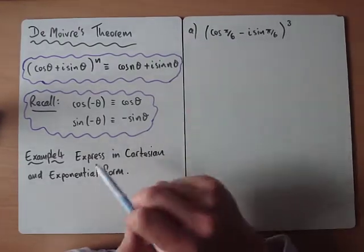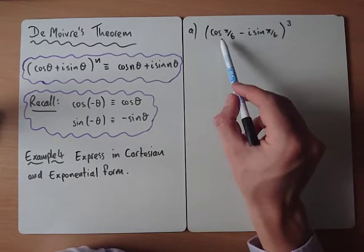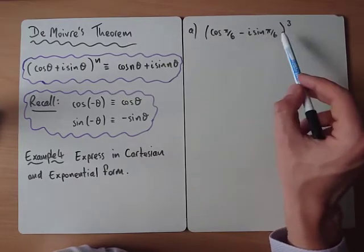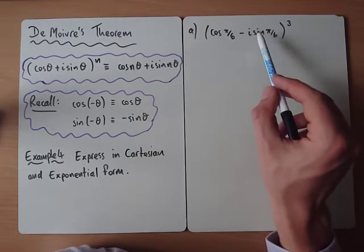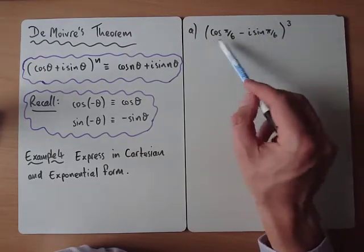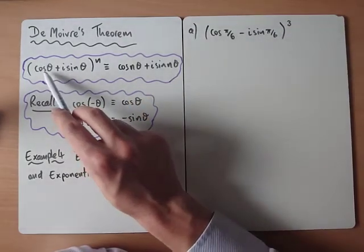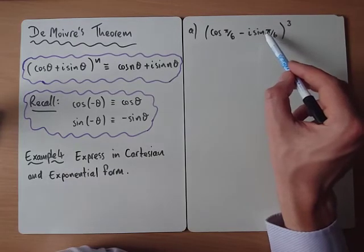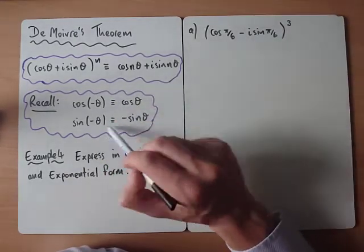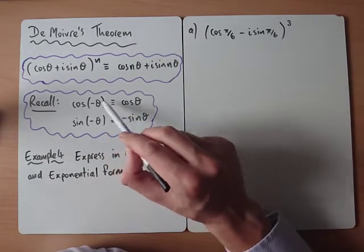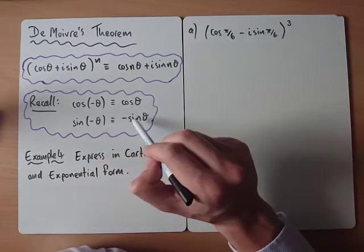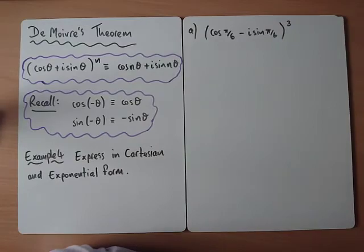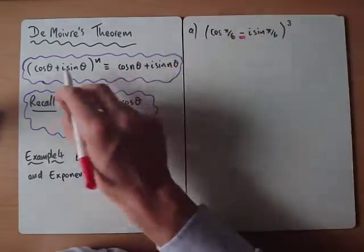Let's look at example 4: expressing in Cartesian and exponential form. We have (cos(π/6) − i sin(π/6))³. We don't want to expand this bracket if we can help it. We have to be careful here because De Moivre's theorem works for cos θ + i sin θ, and our expression has a minus sign, so we can't apply it straight away.